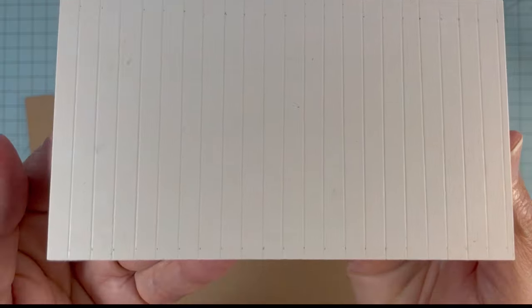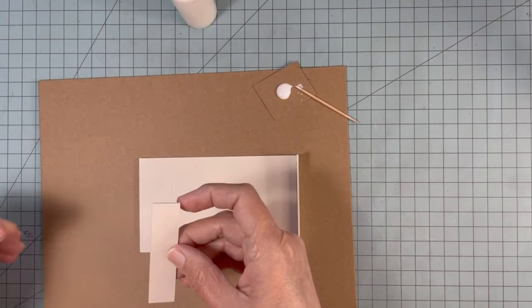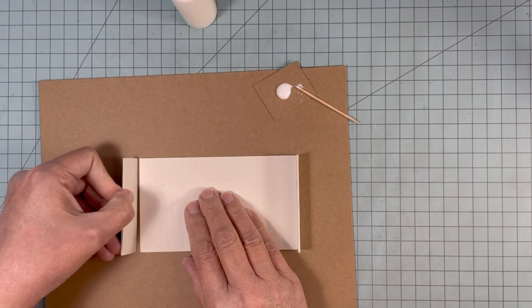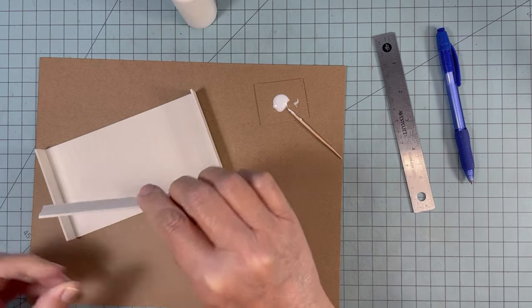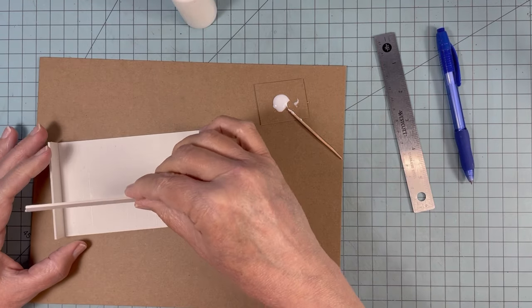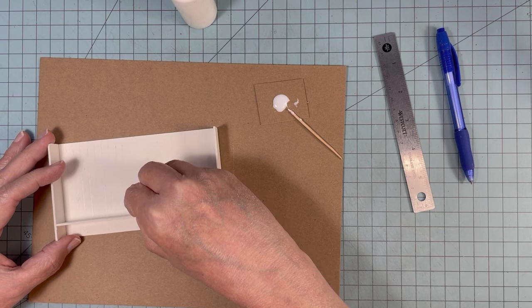I'm building the top half of the unit first. I'm gluing the sides on first. This next section I'm gluing in is the top of the drawer portion, because I'm going to have some little tiny drawers under that.